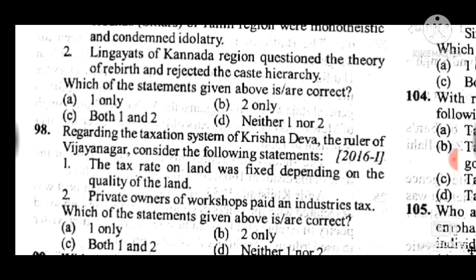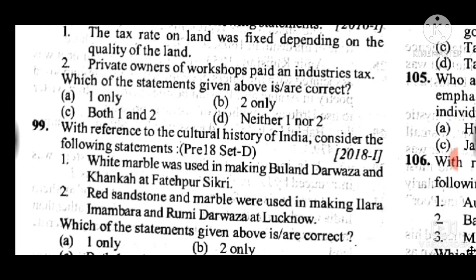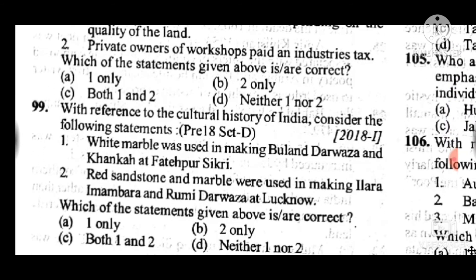Question 98: Regarding the taxation system of Krishnadeva, the ruler of Vijayanagara, consider the following statements. Answer to question 98 is C: both statements 1 and 2 are correct. The tax on land was fixed depending on the quality of the land; private owners of workshops and industries were also taxed. Question 99: With reference to the cultural history of India, answer to question 99 is D: neither statement 1 nor statement 2 is correct.